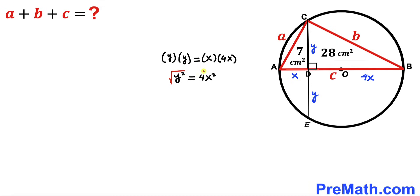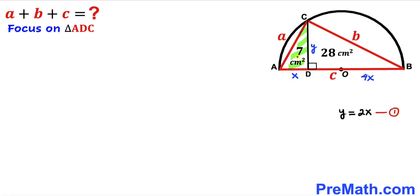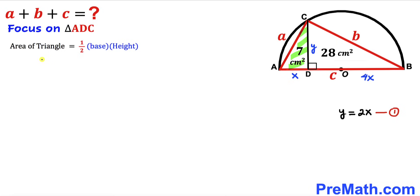We have y² = 4x². Taking the square root of both sides gives y = 2x — this is equation one. Now focusing on right triangle ADC, using the area formula: area = ½ × base × height, we have 7 = ½ × x × y. Multiplying both sides by 2 gives x times y equals 14.